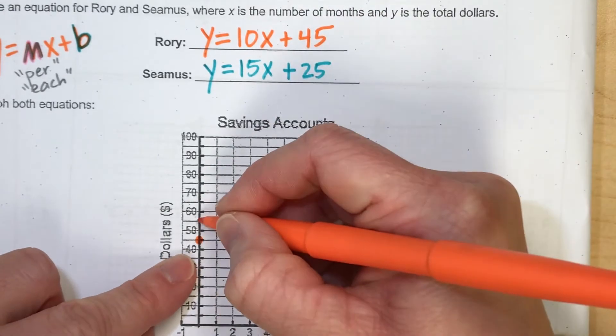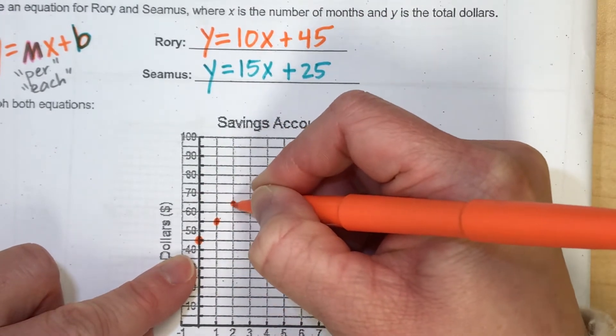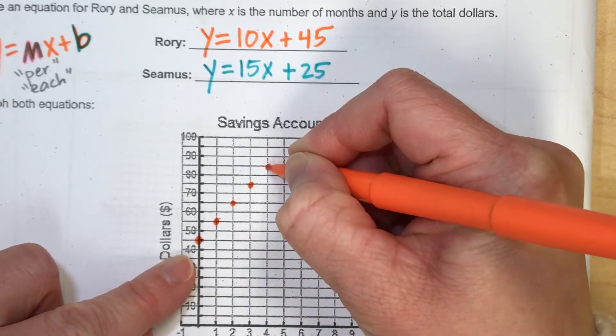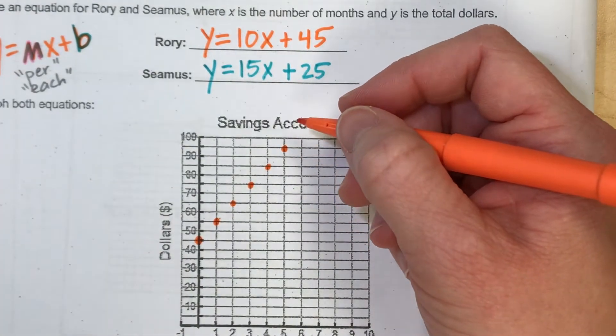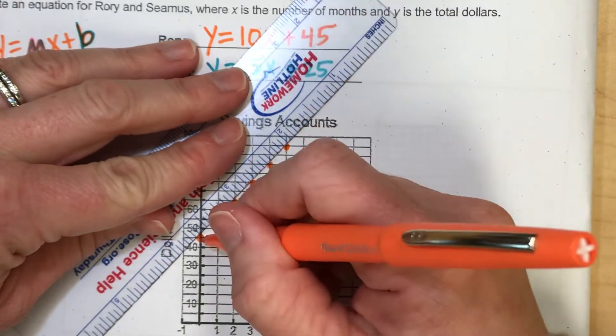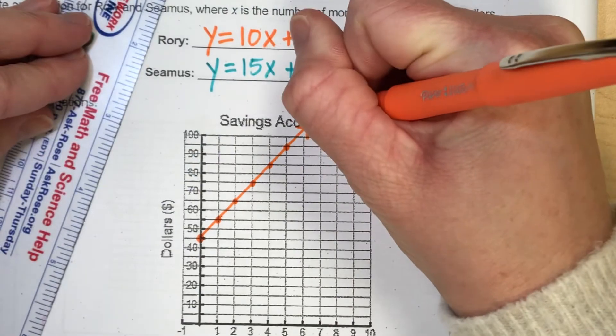So from $45 to $55 in one month to $65 in a second month. And then $75 and then $85 and then $95 going up by tens for Rory. So I'm going to connect these few points with a nice straight line. And I'm going to say this was Rory.